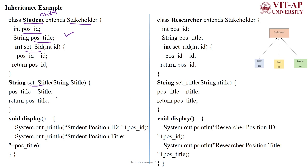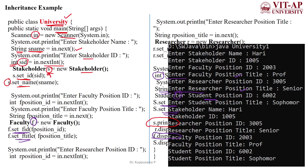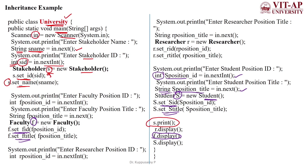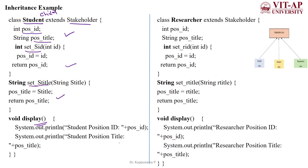After assigning those values, we call the display method to print the student details. The third sub-child class is Researchers.